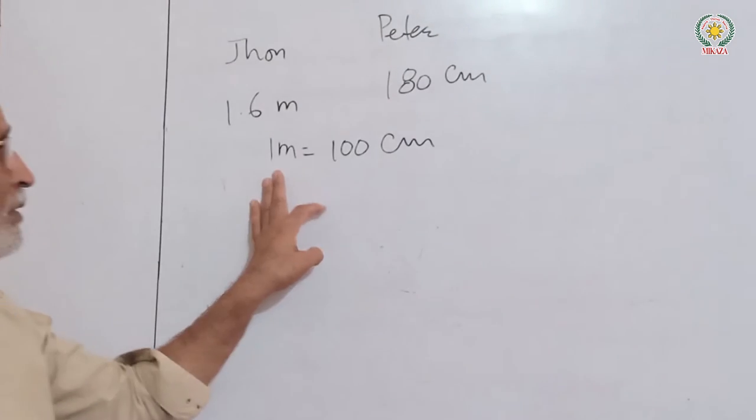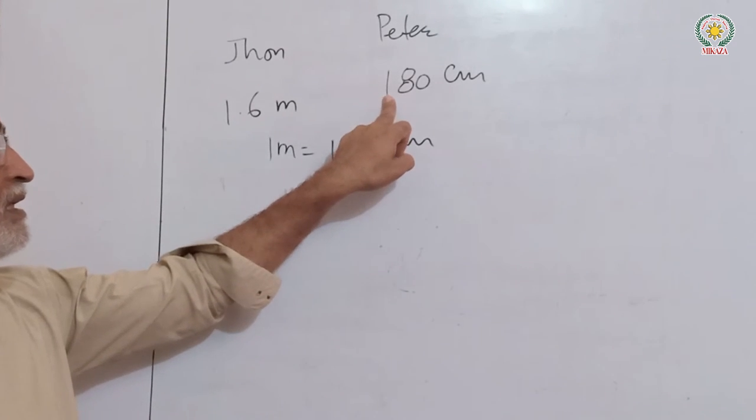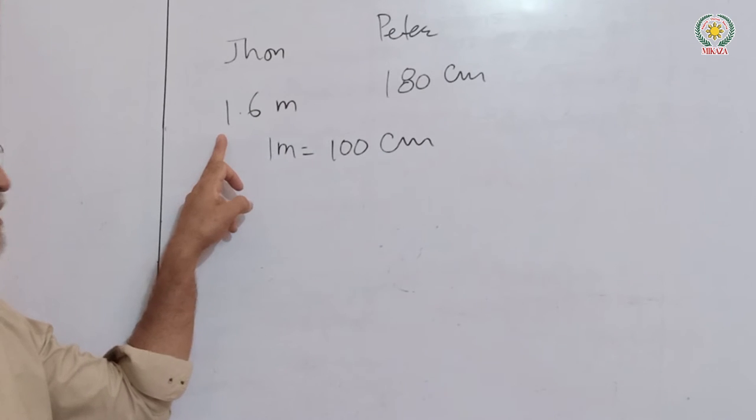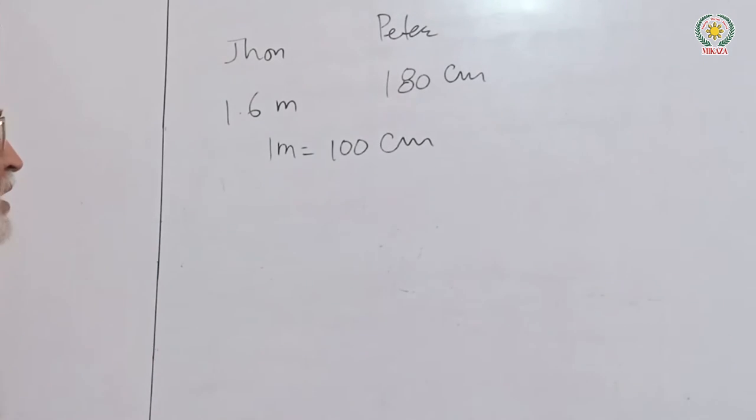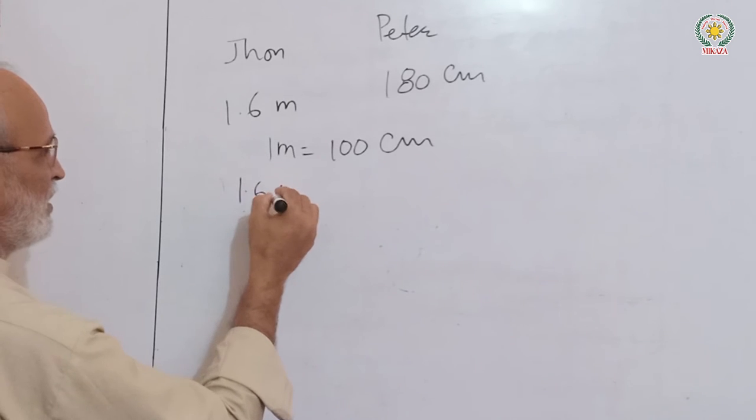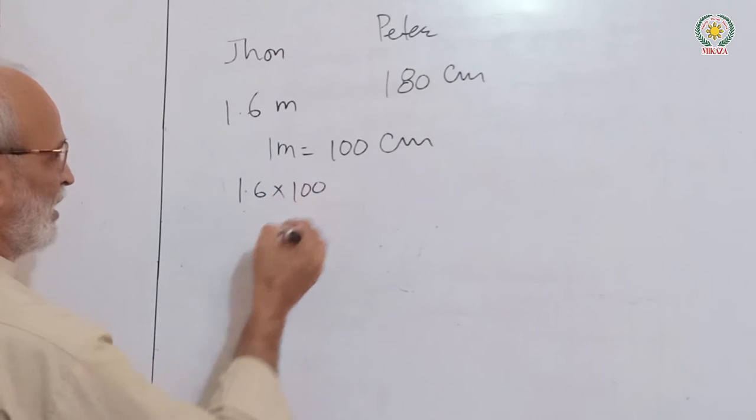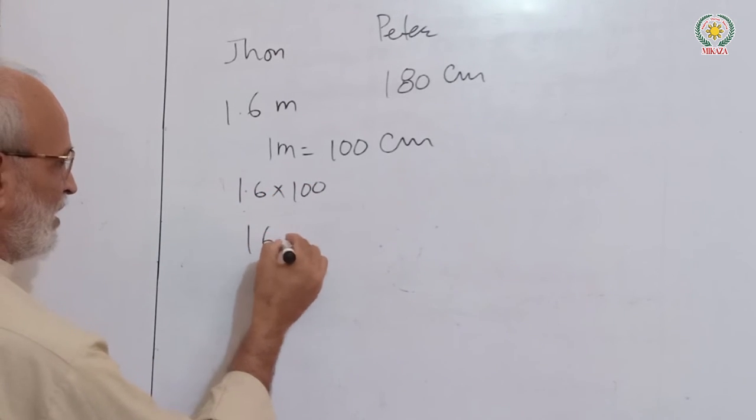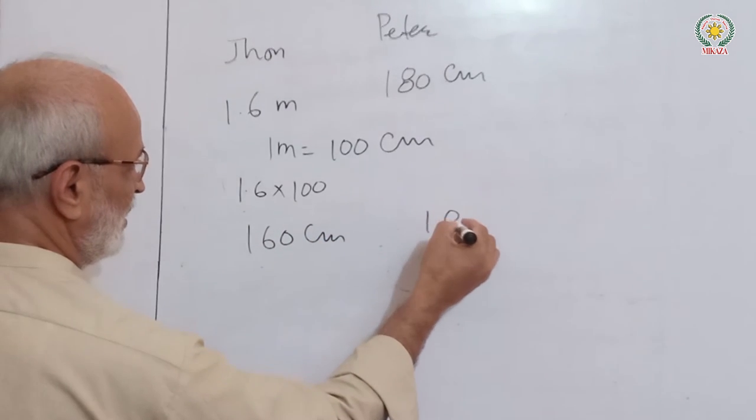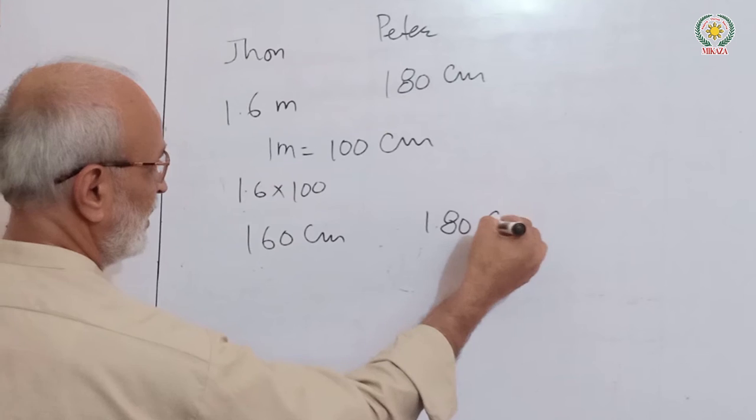We will convert to centimeters. 1 meter equals 100 centimeters, so 1.6 times 100 equals 160 centimeters. Now John is 160 cm and Peter is 180 cm.